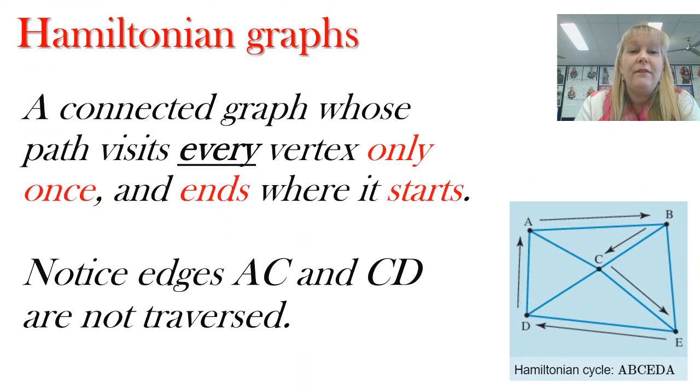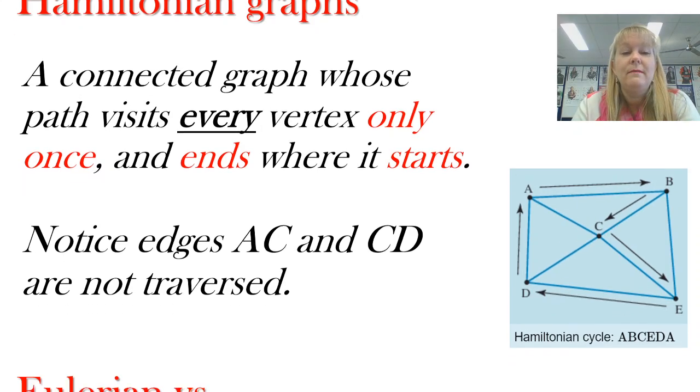Now, a Hamiltonian graph has every vertex visited once. Here's an example. I go from A to B to C to E to D to A. So I'm starting and finishing at A, which is a very key point. I'm visiting every vertex just once, except for the starting and finishing point, but that's something we don't worry about. Notice that I don't have to travel every edge like an Eulerian graph where every edge had to be visited. Here I've skipped AC and CD. So that's quite quick and easy. Excellent.